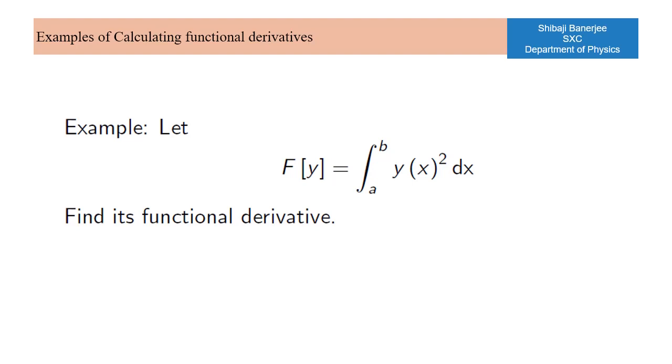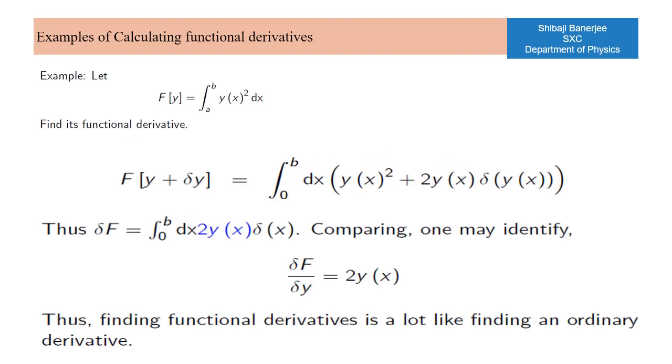In this example, we are going to find the derivative of the quadrature functional. To calculate the increment, change the ordinates at each point by δy and calculate the increment in the area. Arranging the increment between the dx and the δy we find that the functional derivative is the doubling function 2y.